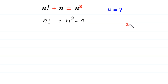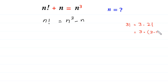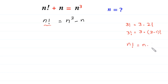Now, because 3 factorial is equal to 3 times 2 factorial, which is equal to 3 times (3 minus 1) factorial, it means 3 factorial equals 3 times (3-1)!. So n factorial is equal to n times (n minus 1) factorial.